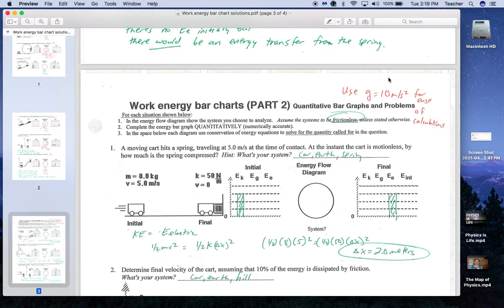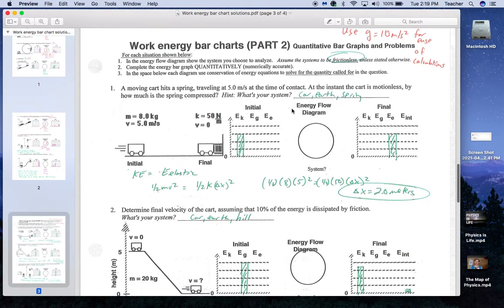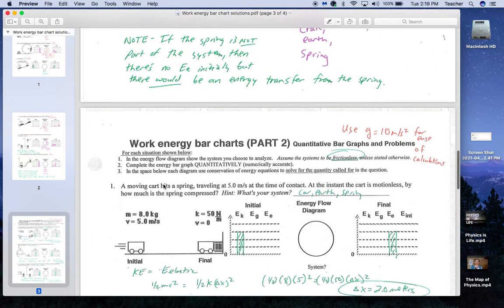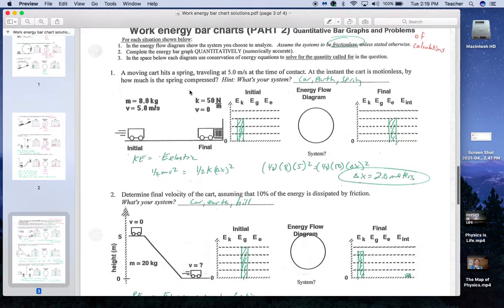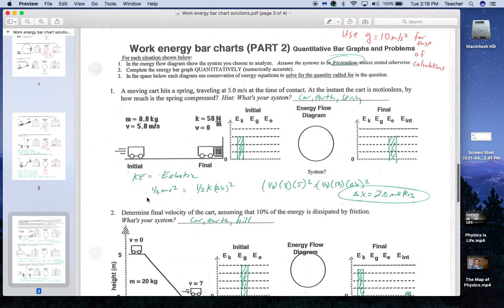For part two, I would recommend using G as 10 meters per second squared or newtons per kilogram. So in this case, we've got the cart moving. The system was car Earth spring. I did not assume that there was any friction. So we have initially kinetic energy, and at the end, it's elastic energy. Initial equals final. Kinetic energy equals elastic potential energy. 1/2 mv squared equals 1/2 k delta x squared.